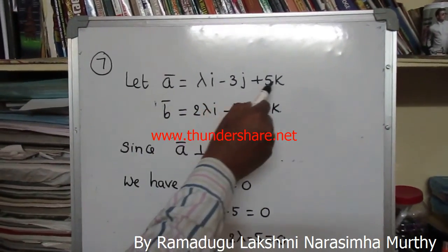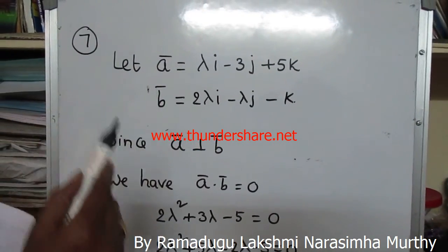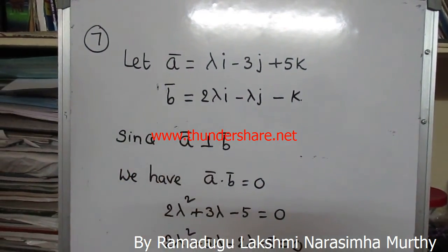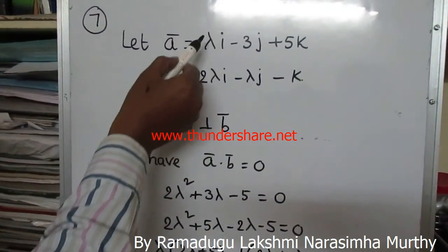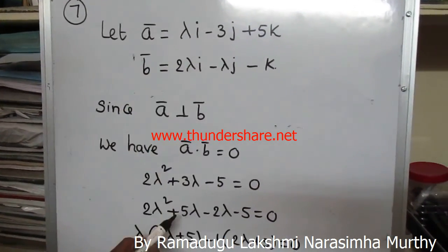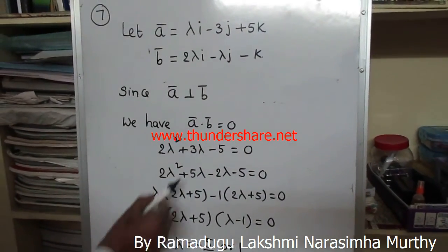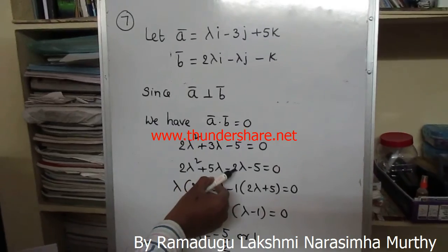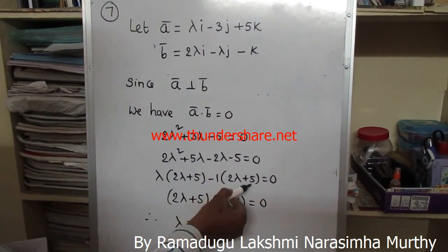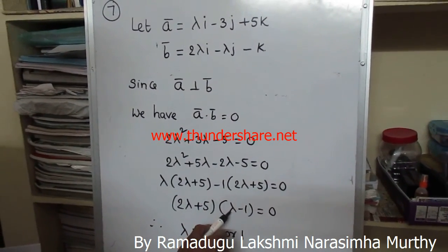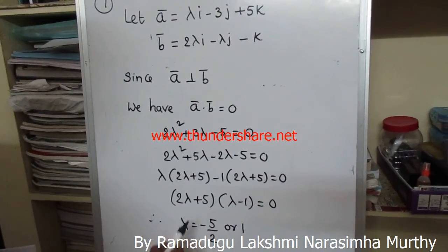Given ā = λi - 3j + 5k and b̄ = λi - λj - k. Since ā is perpendicular to b̄, their dot product equals zero: a·b = λ·λ + (-3)(-λ) + (5)(-1) = 2λ² + 3λ - 5 = 0. Factorizing: 2λ² + 5λ - 2λ - 5 = 0 → (2λ+5)(λ-1) = 0. Therefore λ = -5/2 or λ = 1.